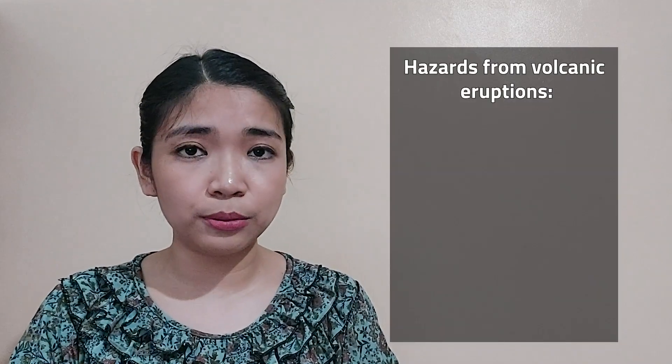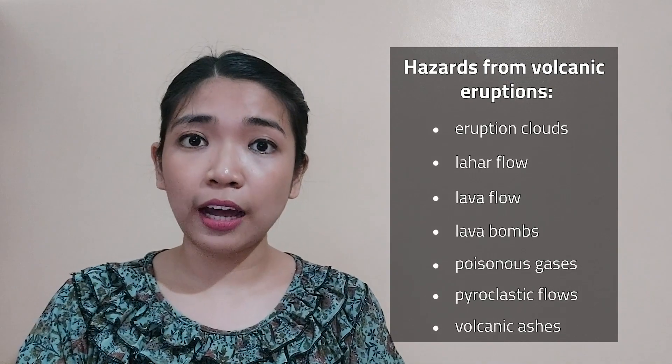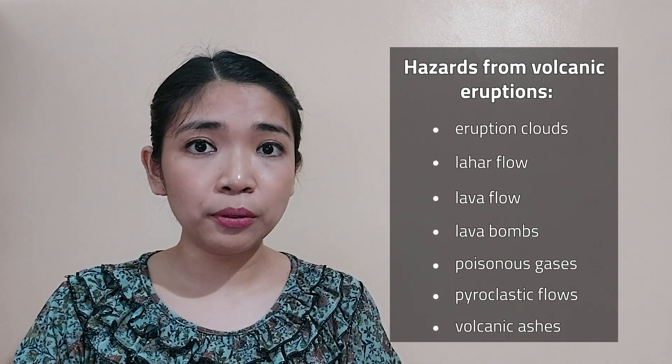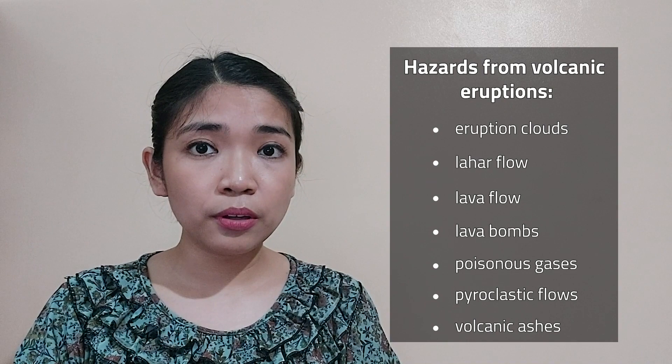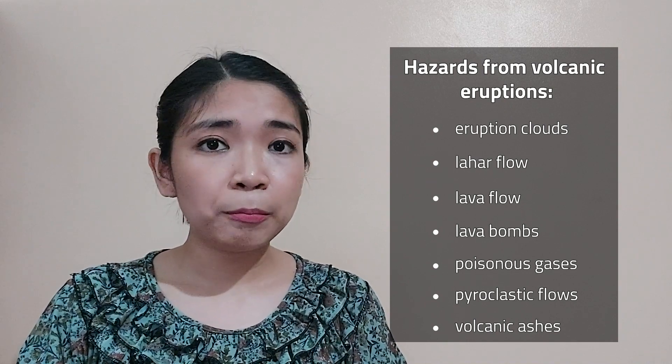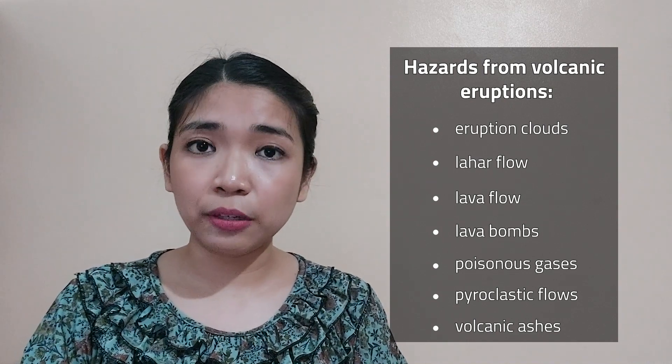These types of volcanic eruptions can be accompanied by other natural hazards such as earthquakes, mud flows and flash floods, landslides, acid rain, fire, and even tsunamis. Hazards from volcanic eruptions include: eruption clouds, lahar flow, lava flow, lava bombs, poisonous gases, pyroclastic flows, and volcanic ashes.